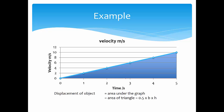The displacement is the area under the velocity-time graph, which in this case is a triangular shape. It is simply half times base times height. The base is 5 and the height is 10, so the displacement is 25 meters.